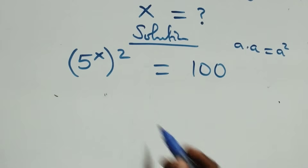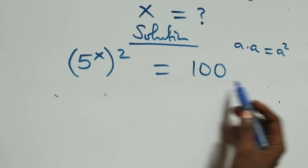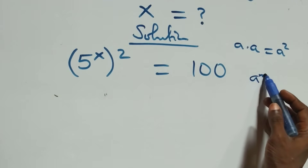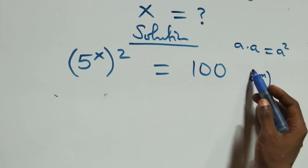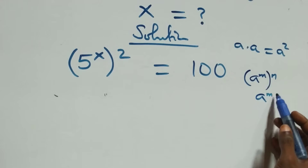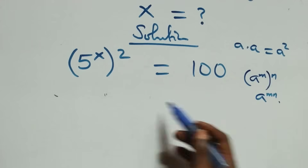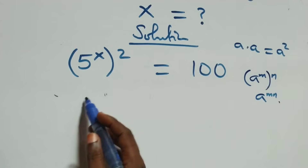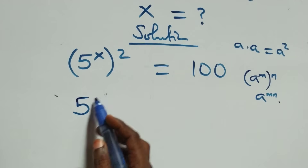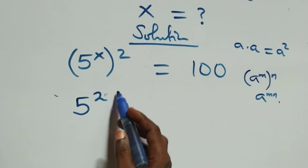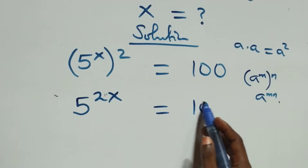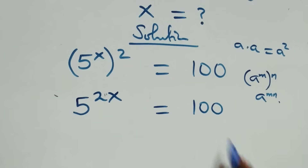The next step follows the law of indices: when we have a raised to power n, raised to power n, this is the same thing as a raised to power m times n. This power multiplies, and we have 5 raised to power 2x equals 100.